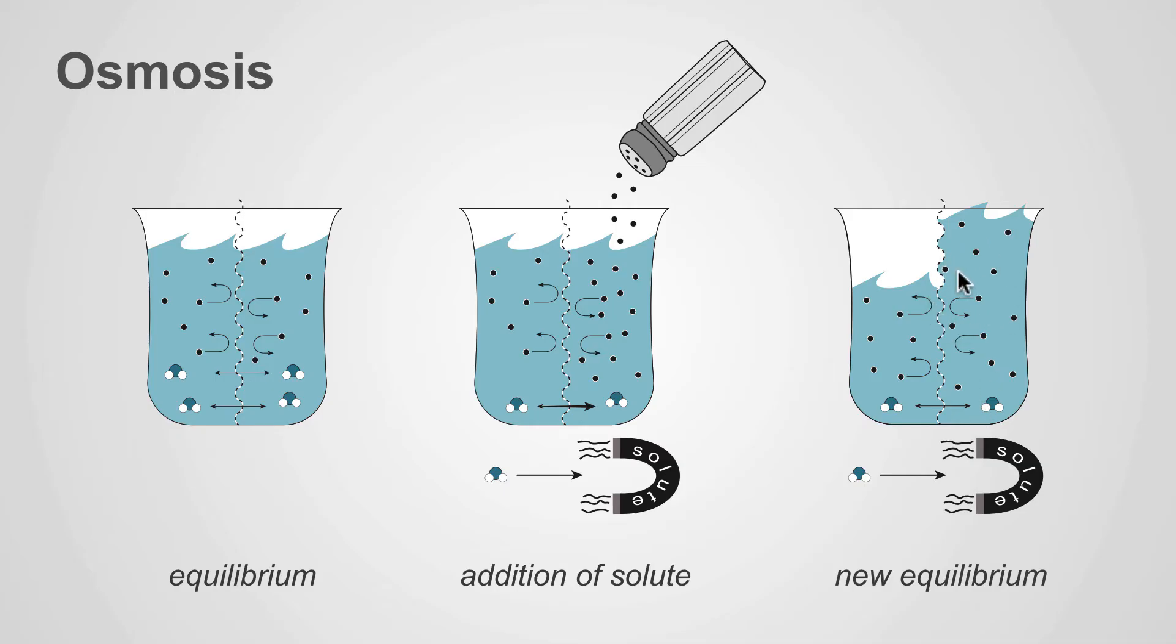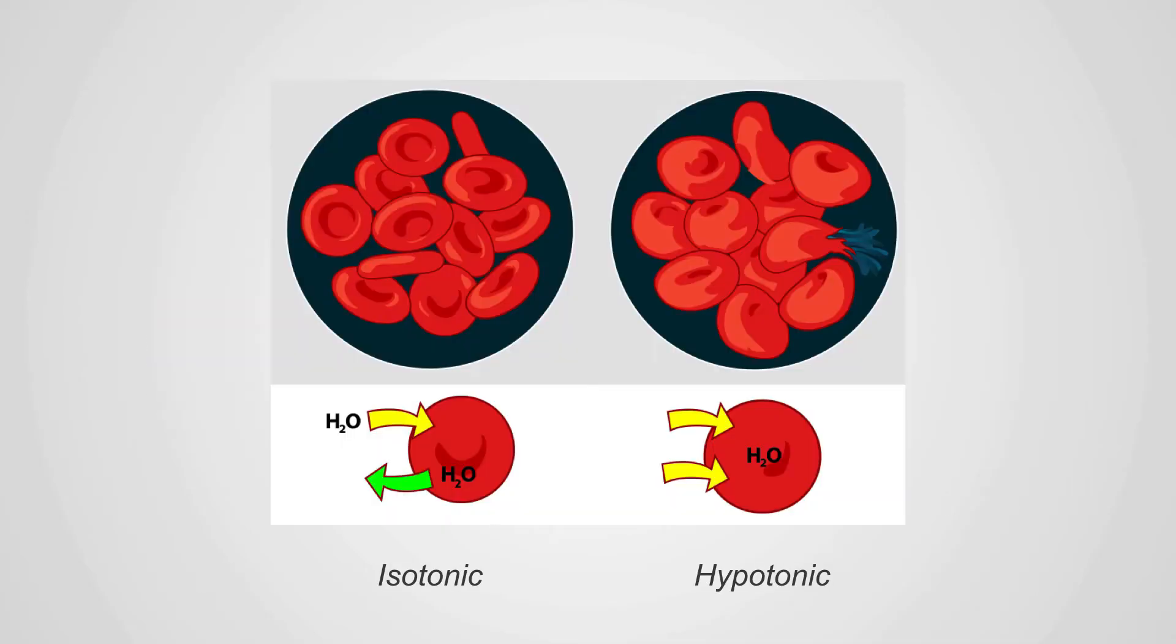This increases the volume of this side of the membrane, and it will continue to increase until the osmolality is equal on both sides of the membrane, returning you to equilibrium, except for you have increased volume on one side compared to the other. This can be seen in the body